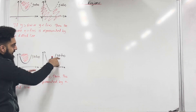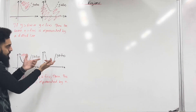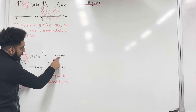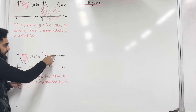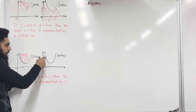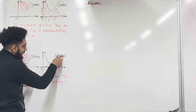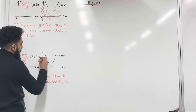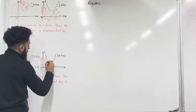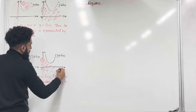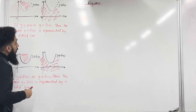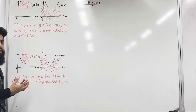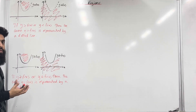y is less than or equal to f of x. Because the equal is included, the curve is represented by a solid line. And because it's less than, you need to shade in everything below the curve — so all of this part over here. So that there is the basic understanding of regions.